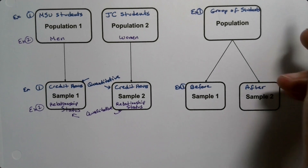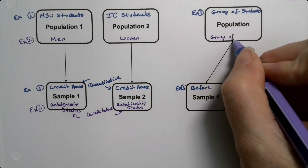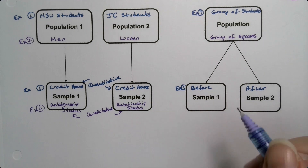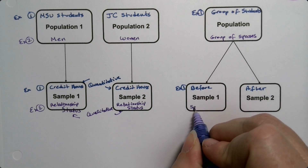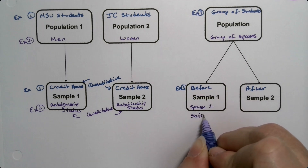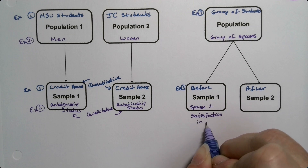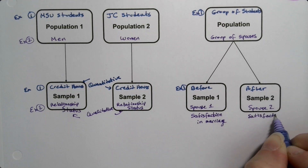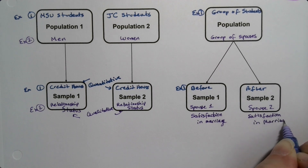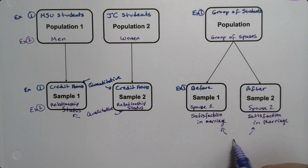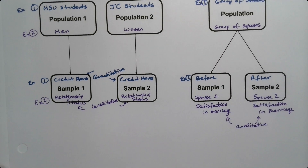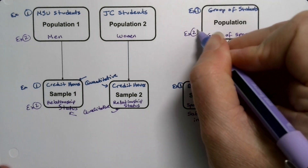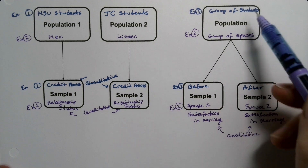As opposed to over here, where I take a group of spouses — one group of spouses — and ask them about marital satisfaction. I ask spouse one their satisfaction in the marriage and then spouse two their satisfaction in the marriage. This is qualitative — how satisfied are you? So they could be spouses like this, or they could be just one group of people before and after. Both things count. On the left we have independent; on the right we have dependent.